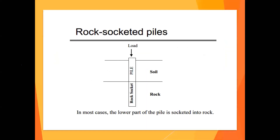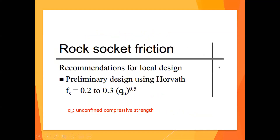Now let's talk a little about rock-socketed piles. As the name implies, the lower part of the pile is socketed into rock. Rock-socketed pile design is a big area of study in itself, but I just want to share what is commonly done, since we are still doing a preliminary design. For friction, we use 0.2 to 0.3 multiplied by the square root of the unconfined compressive strength of the rock — which is a lab test carried out on the rock sample.